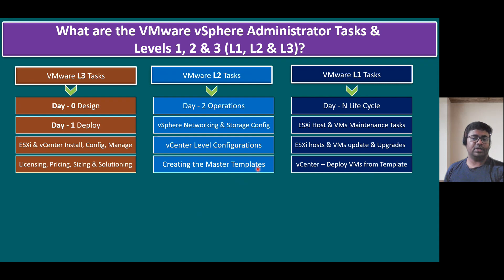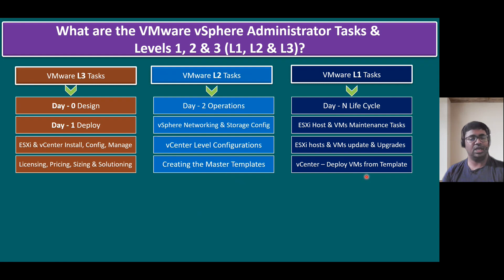The L2 team mainly focuses on creating master templates, which are assigned to the L1 team. L1 deploys virtual machines using those master templates. Master templates may consist of the latest Windows OS versions like Windows 2022, Linux flavors like Red Hat Enterprise Linux 9, Solaris versions, or predefined virtual machines and virtual appliances. The initial configuration — including OS-level hardening — is done by L2. That master copy is converted to a template and assigned to L1, who deploys multiple virtual machines from it as customer requests come in.